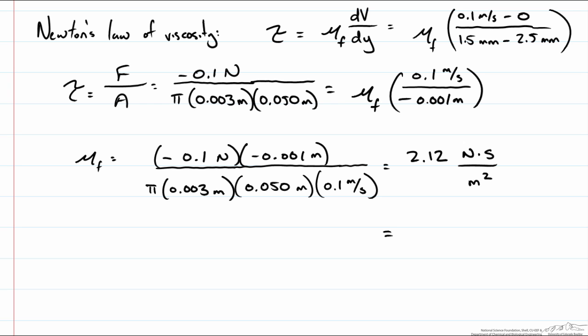Another system of units used to describe the viscosity of a fluid is that of centipoise. We know that 1 newton second per meter squared is equal to 1,000 centipoise. So in this case we could write this as 2,120 centipoise.